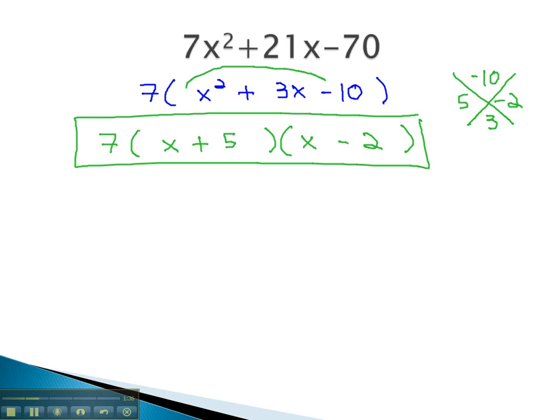This expression is now factored. Let's take a look at another example, where we factor out the greatest common factor first, and then factor using the AC method from there.